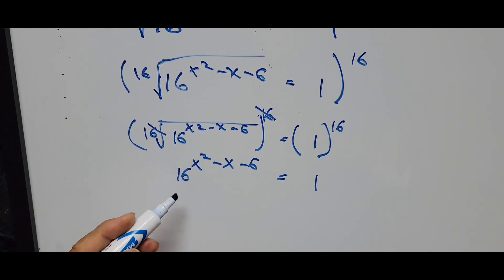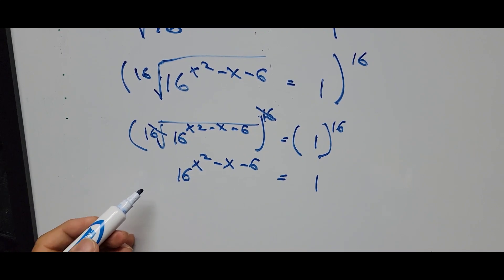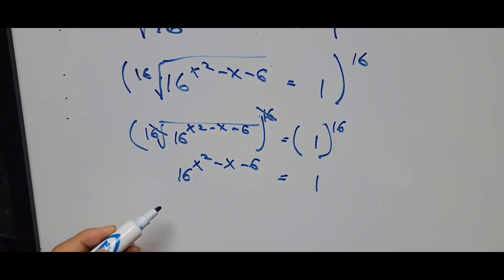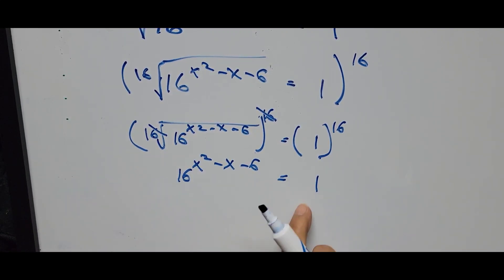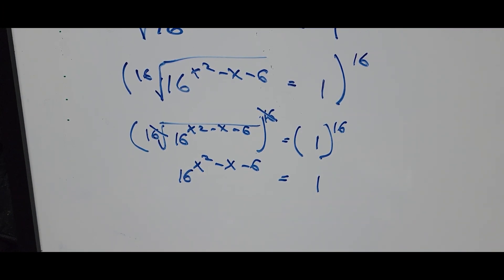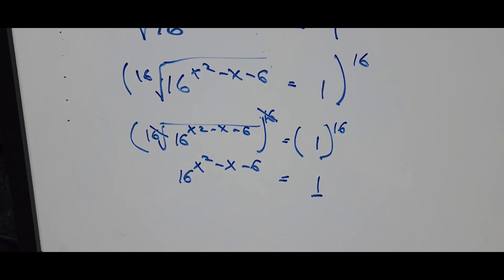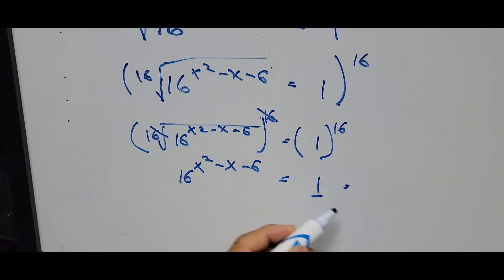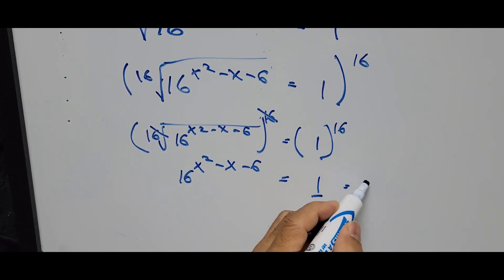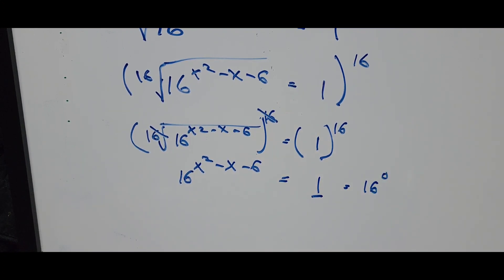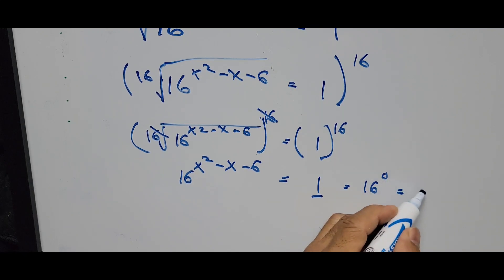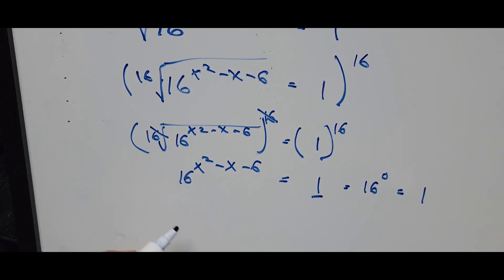From here, this equation can be solved in two ways: using the natural logarithm or common logarithm, or we can manipulate the constant 1 on the right side. The constant 1 can be written as 16 raised to the 0 power, since any number raised to 0 equals 1.